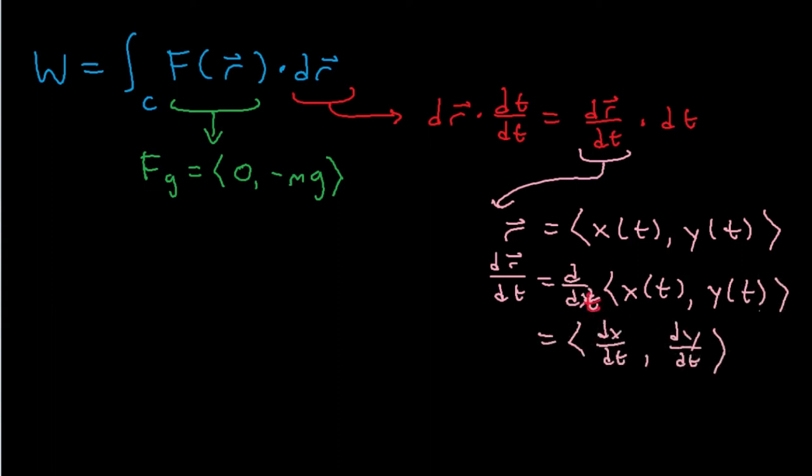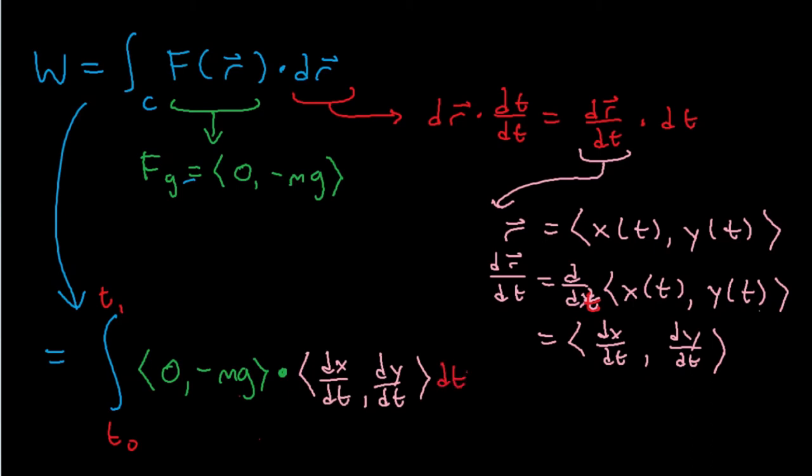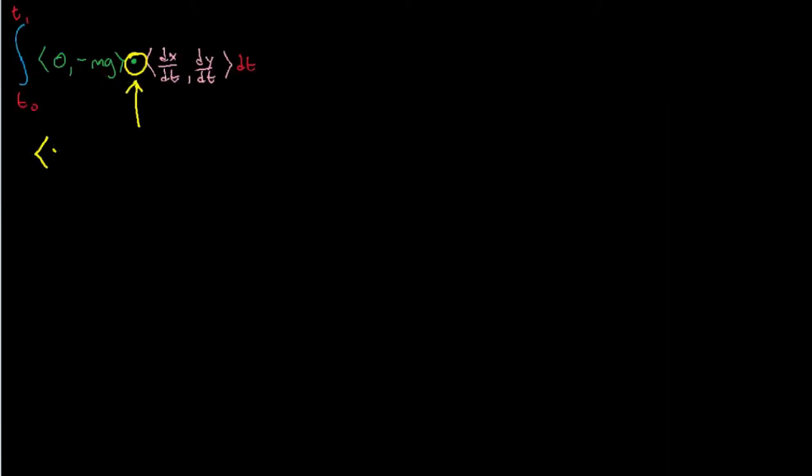So since we changed the integral to be with respect to dt, we need to change the bounds of the integration from a line integral along curve C to a definite integral between t0 and t1. Then we can substitute in the force and dr. If you recall from analysis, a dot product between two vectors is where you multiply the x's and the y's and add them together.